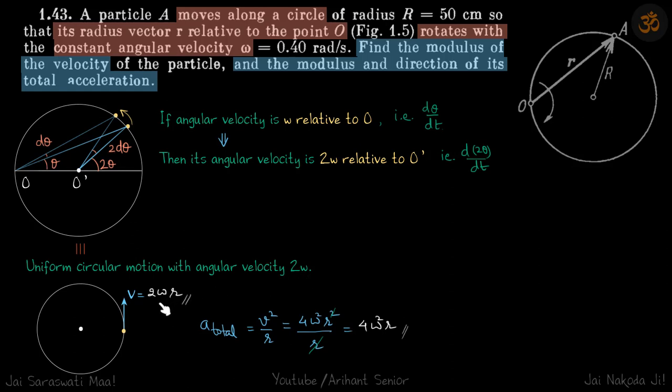In that case, velocity will be 2*omega*r and A_total will only be in the normal direction because in tangential direction velocity is constant. So in normal direction acceleration will be v²/r, and v is 2*omega*r. If you put that, you will get your answer.